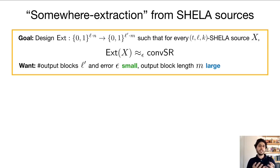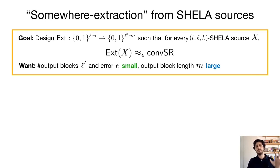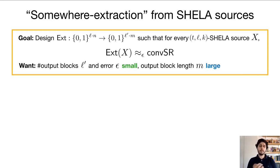Now that we've seen these applications, we can dig deeper into SoMa extraction from SHELA sources. The goal is to design a deterministic function, which we call a SoMa extractor, that takes as input an arbitrary SHELA source with given parameters such that its output will be statistically close to a convex combination of SoMa random sources. Based on what we've seen, we want to minimize the number of output blocks L', minimize the statistical error — especially important for cryptographic applications — and at the same time maximize the output block length M, which is the number of bits in each block of the resulting SoMa random source.